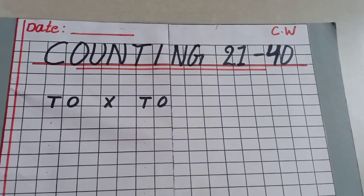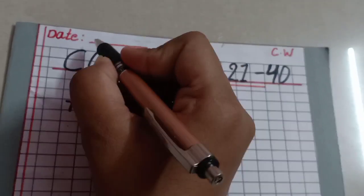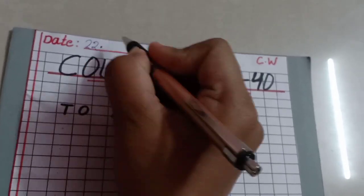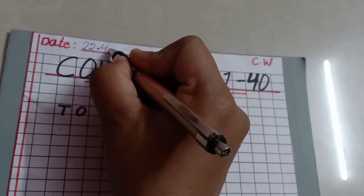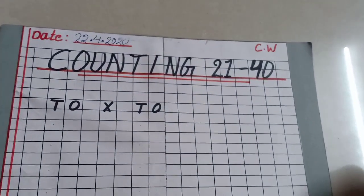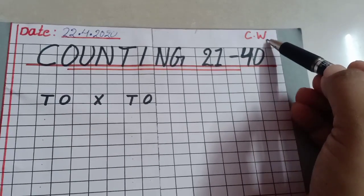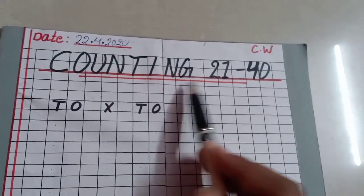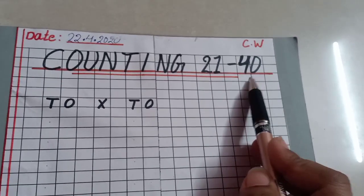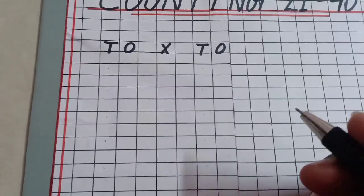First, you have to write the date. I'm writing: 22 dot 4 — as it is April — then two thousand twenty. Then write 'Class Work,' as this is your class work. Parents, you can write the heading: 'Counting: twenty-one to forty,' so that the children will know they have to start from twenty-one and end at forty.